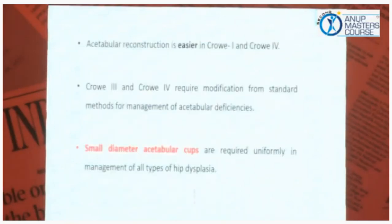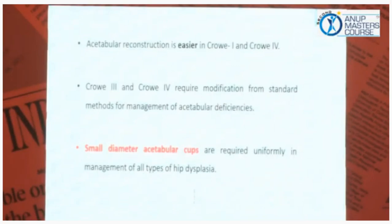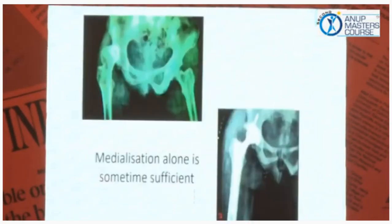Acetabular reconstruction is easier in Crowe type 1 and type 2; Crowe type 3 and type 4 require modification of the standard procedures. Small-diameter acetabular cups are required uniformly in the management of all types of dysplasia. In type 1, only medialization is needed — we just medialize and no graft is required, fully covered.